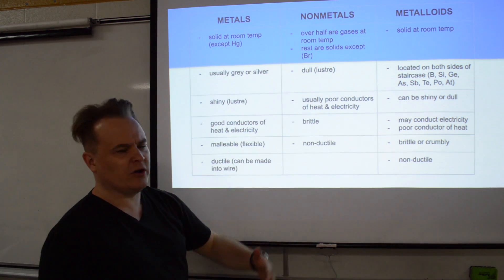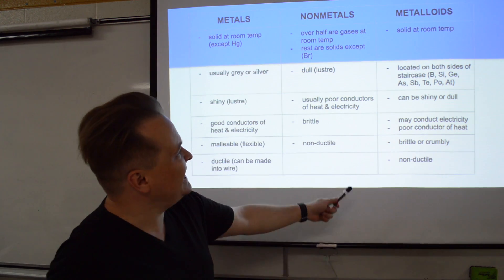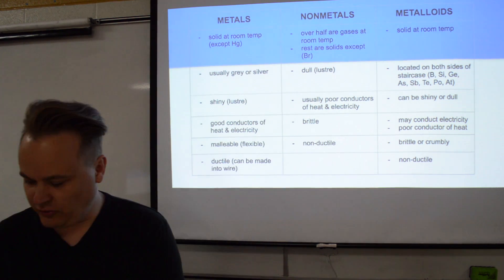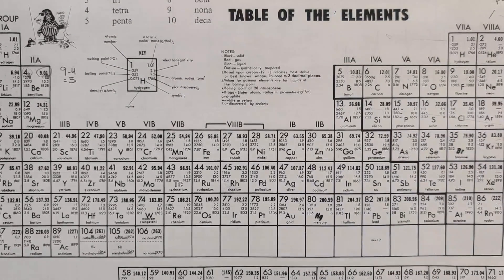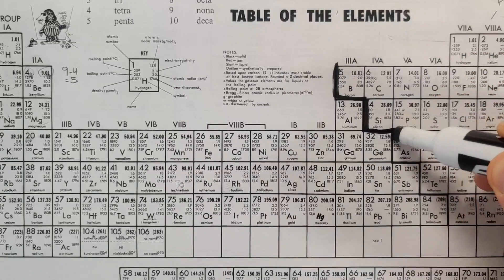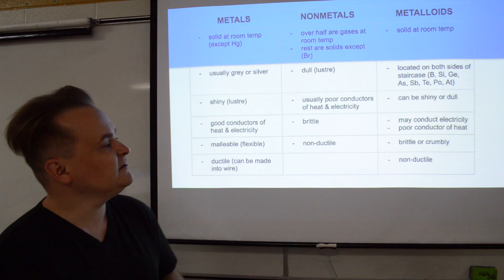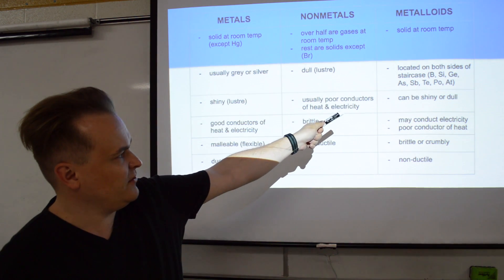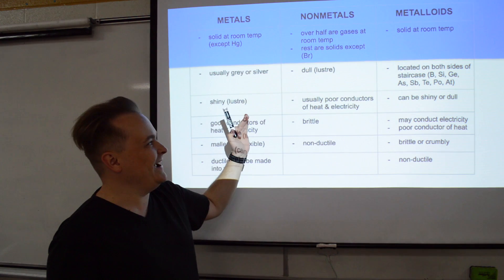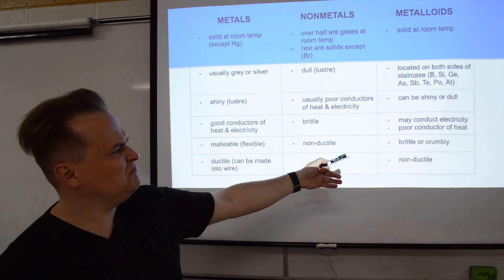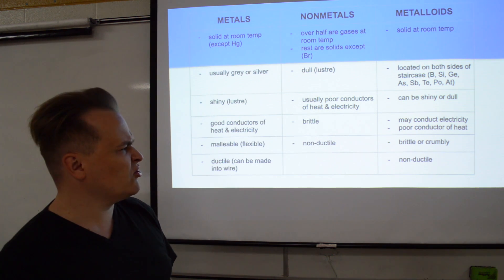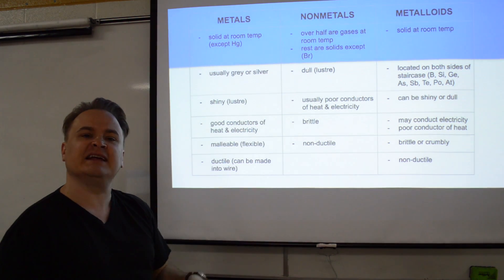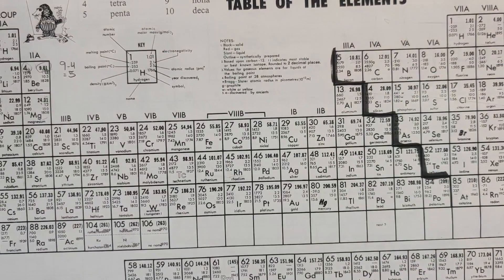So now, if you know what a metal is and what a non-metal is, guess what a metalloid is — it's kind of a blend in between. Metalloids are touching the staircase, located on both sides of it, and there's a good list of them. They can be shiny or they can be dull. They may conduct electricity, but they're bad at conducting heat. They're brittle or crumbly, and you can't really turn them into wire — ductile means can you turn it into wire.